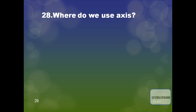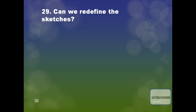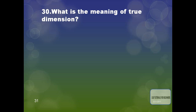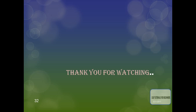The next question is: where do we use the axis? The axis is used in creating a shaft feature in CATIA — that is, for revolve features like shafts. Can we redefine the sketches? Yes, definitely we can redefine the sketches. What is the meaning of two dimension (2D)? The two dimension is the dimension desired after machining — in other words, it is the value that should be attained after machining. Thank you for watching, please subscribe to my channel.